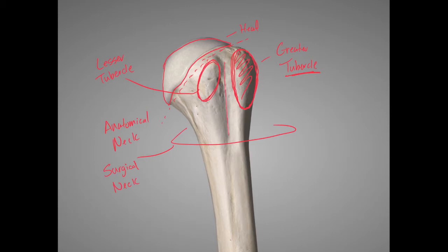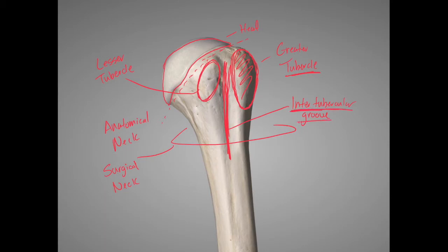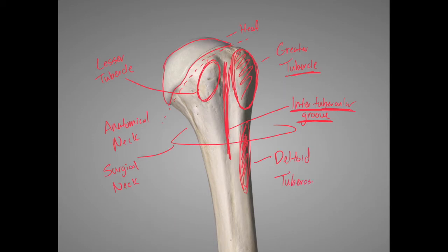The lesser and greater tubercles of the humerus form a groove between them. This groove found between both tubercles is going to be called the intertubercular groove of the humerus — 'inter' meaning between the tubercles, and it forms a groove. And again, this roughened patch on the lateral part of the humerus is your deltoid tuberosity, where the deltoid muscle inserts.